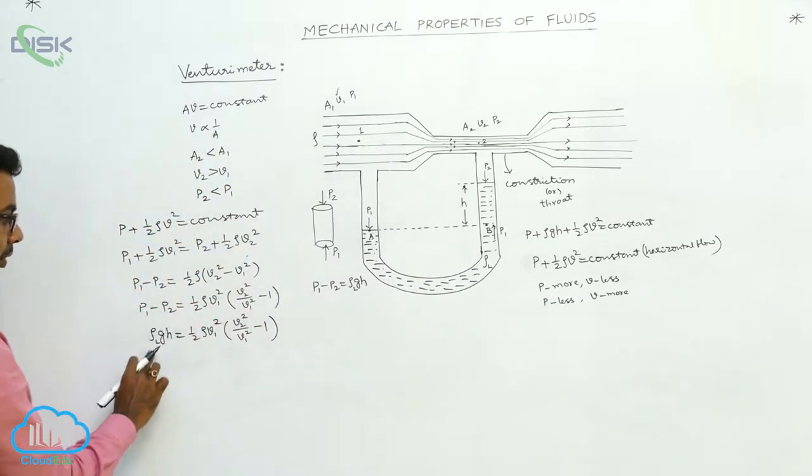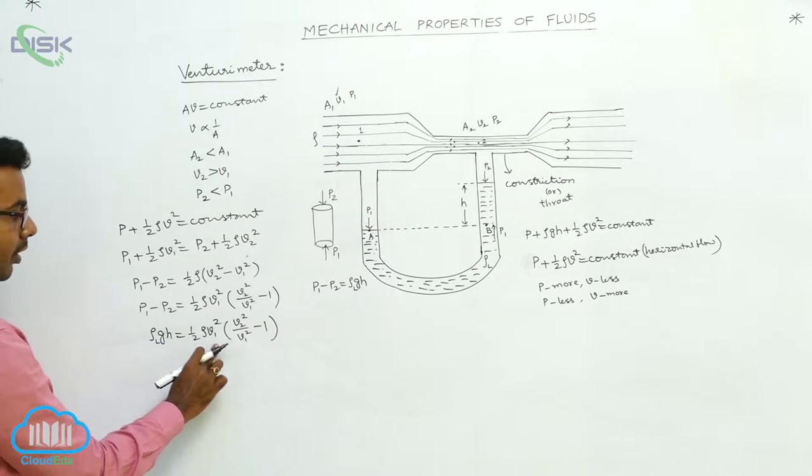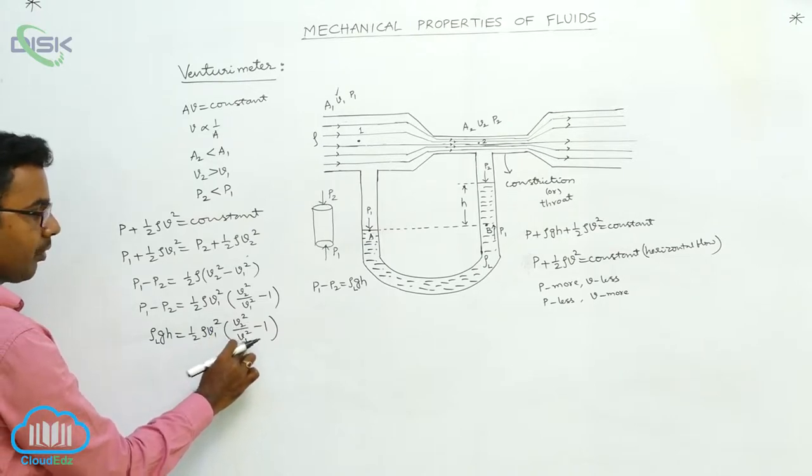We substitute here P1 minus P2 is equal to rho LGH is equal to half rho V1 square into V2 square by V1 square minus 1.